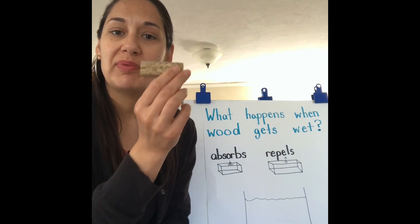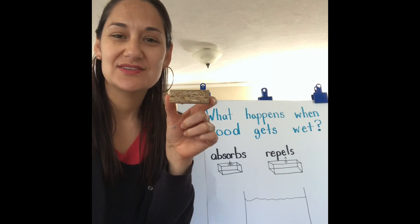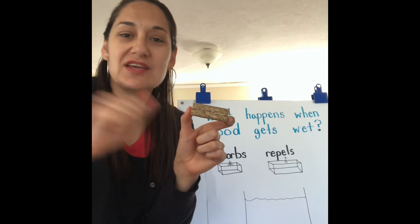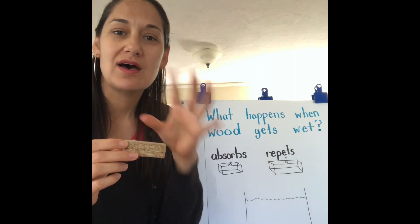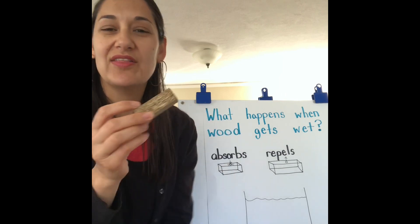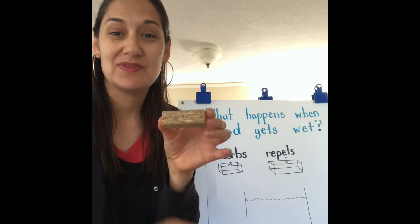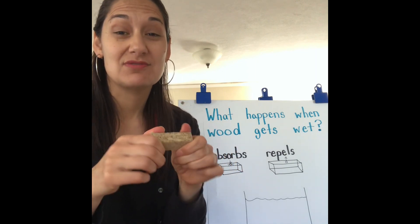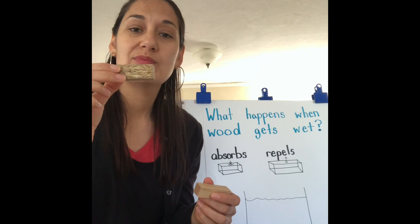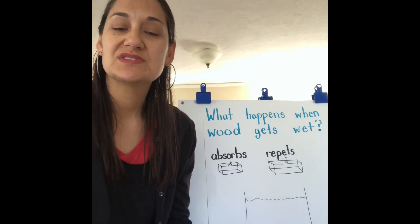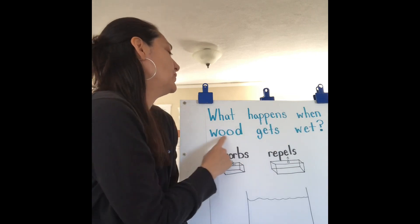And then this one is called particle board, and it also does not come from a particle board tree. It comes from sawdust. Sawdust is when you shave wood and you make tiny little pieces of sawdust. You may have seen that at home when your mom or dad uses a saw and all this dust comes off the wood. They take all that dust and put it together with a special kind of glue and mold it together to make a piece of wood. It's much cheaper than getting it from a tree, and it's not as strong. So we're going to look especially at the cedar and the particle board and see what happens when they get wet. Let's read our focus question: what happens when wood gets wet?